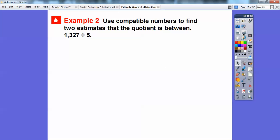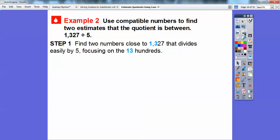Let's do another example. Use compatible numbers to find two estimates that the quotient is between. So the quotient is going to be 1,327 divided by 5. We're going to find two numbers close to 1,327 that divides easily, and we're going to focus on this 1,300s. So this 3 ends in the 100s spot.